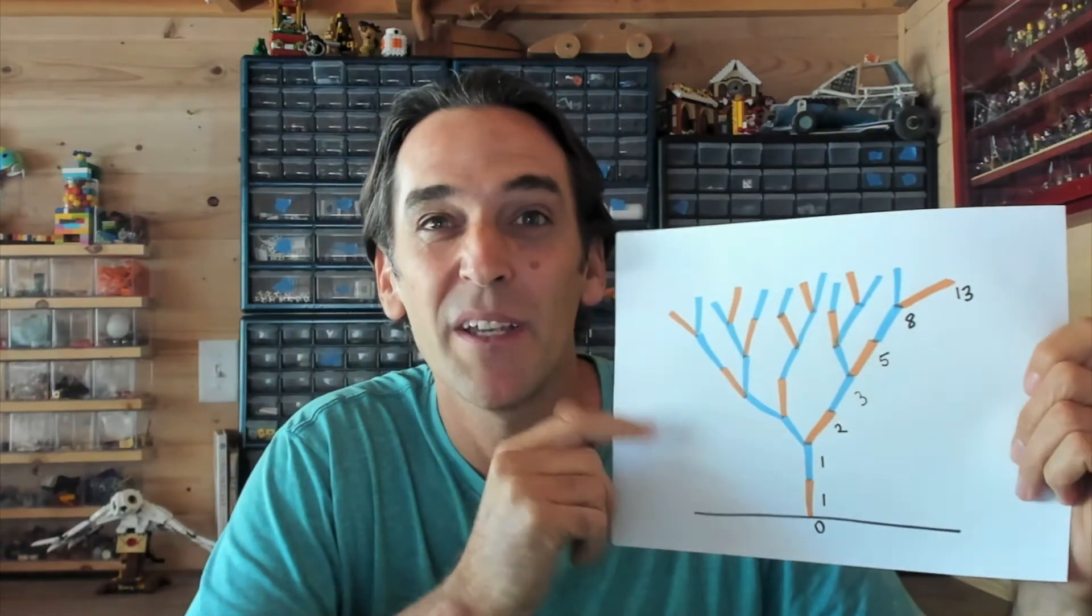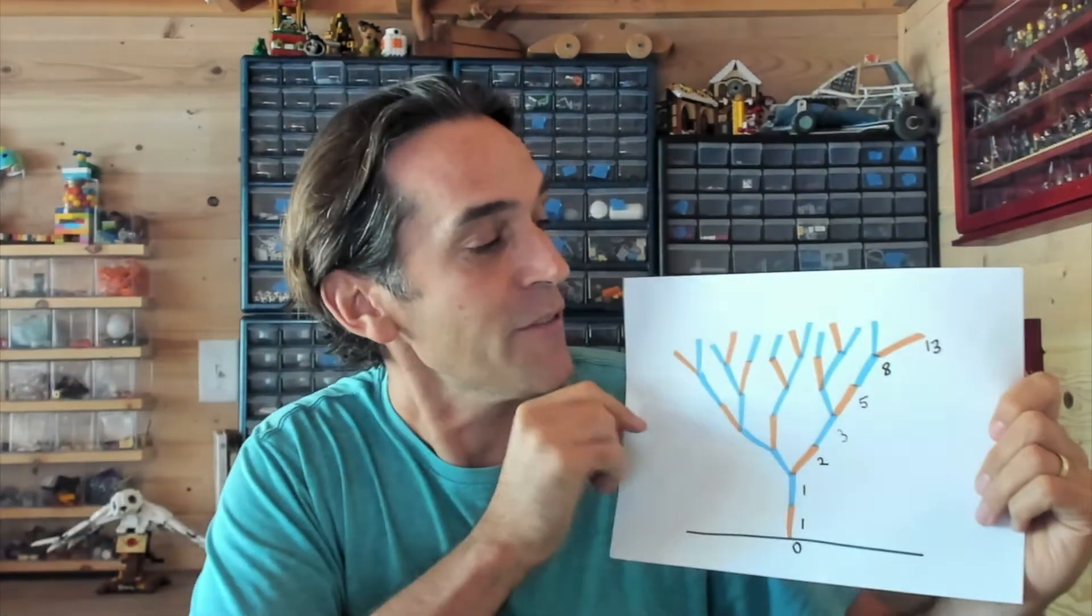Now, if you look outside at a tree, not every tree will have this exact pattern. But in general, branches need to mature before they can split. And so you will find roughly the Fibonacci sequence in the growth of a tree.